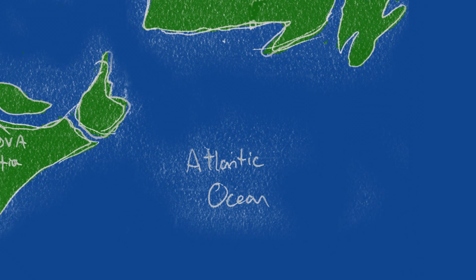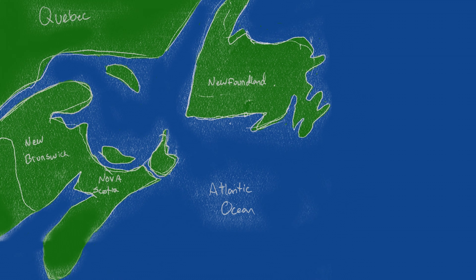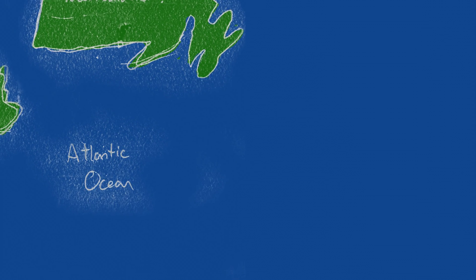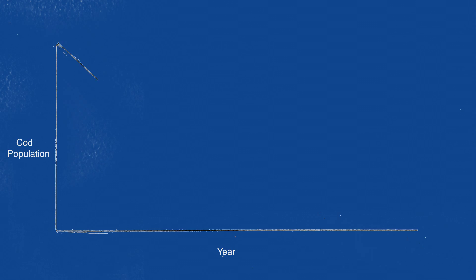In 1993, the Northwest Atlantic Ocean experienced a collapse 500 years in the making. Centuries of overfishing had finally taken its toll on the Atlantic cod population.